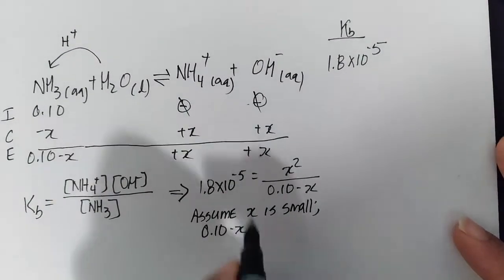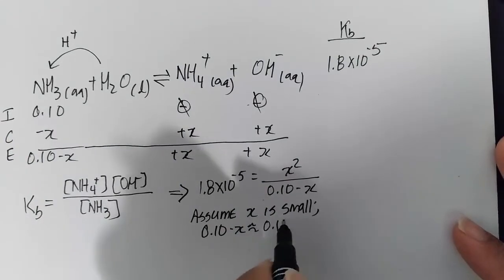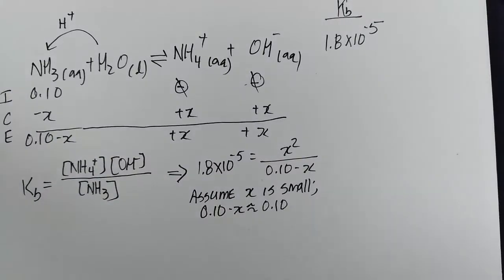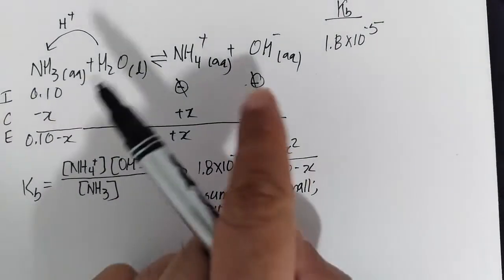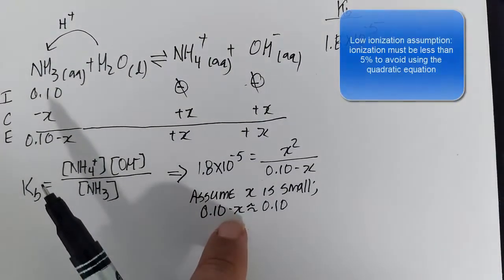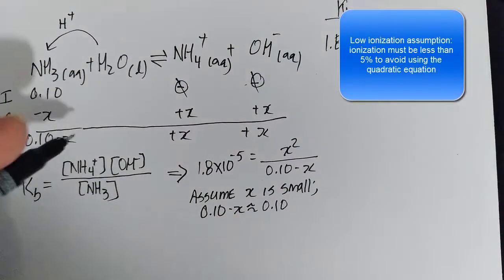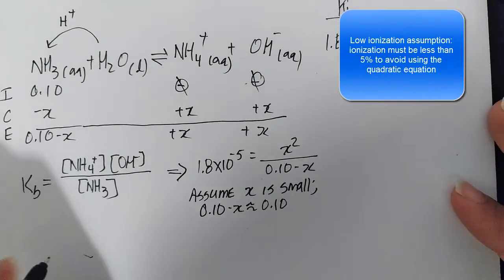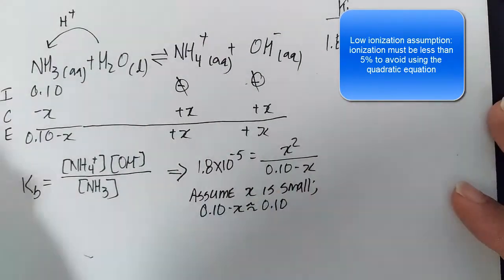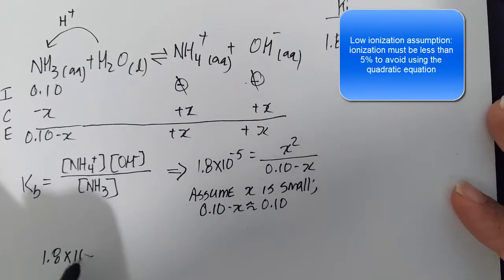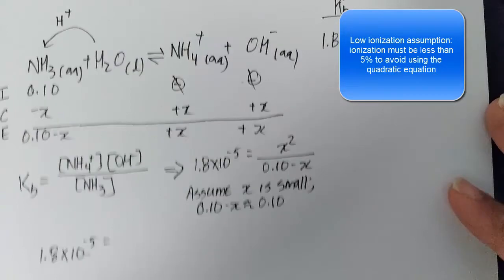In our low ionization assumption we assume very little of it goes into the forward direction, enough to measure a pOH, but very little to really influence the x value. So x is significantly small. 0.10 minus x is just going to be 0.10. This is called the low ionization assumption, and it's the hallmark of saving ourselves from extensive quadratic equation calculations.